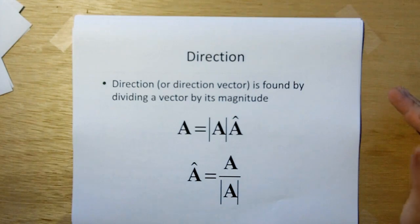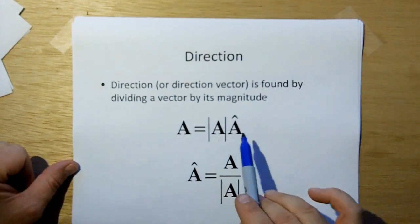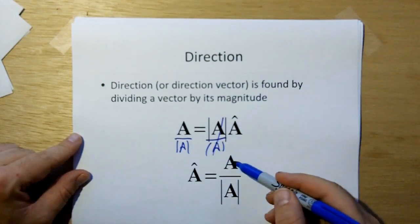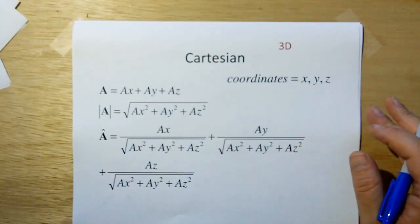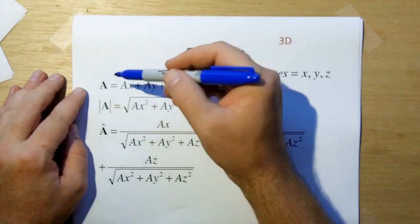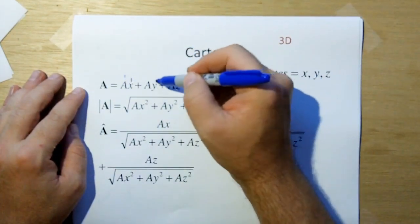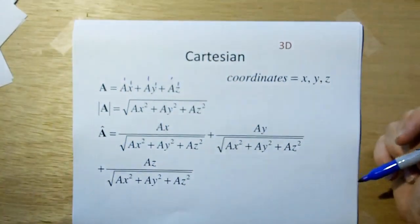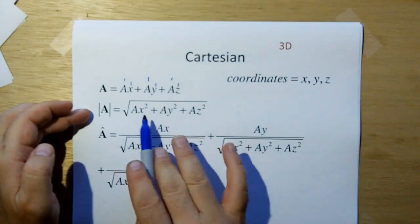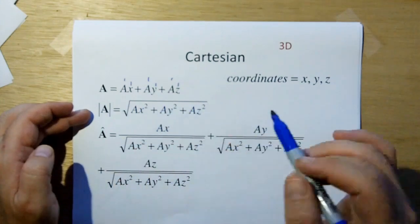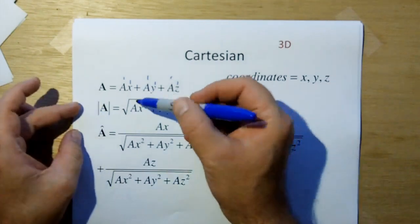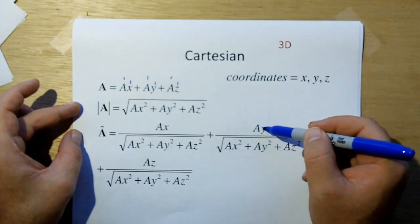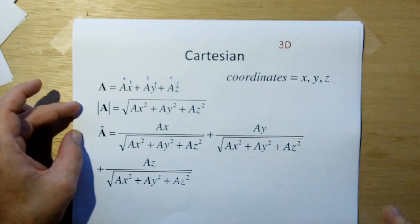The way we can find direction once you know magnitude: since a vector is a magnitude times direction, all you have to do is divide both sides of that equation by magnitude, and then your direction is your vector divided by its magnitude. For Cartesian coordinates, you have your vector A, which is ax plus ay plus az — the x, y, and z components of A. You find the magnitude of A by squaring each component, summing them, and taking the square root. Then dividing A by the magnitude of A gives you the direction vector.